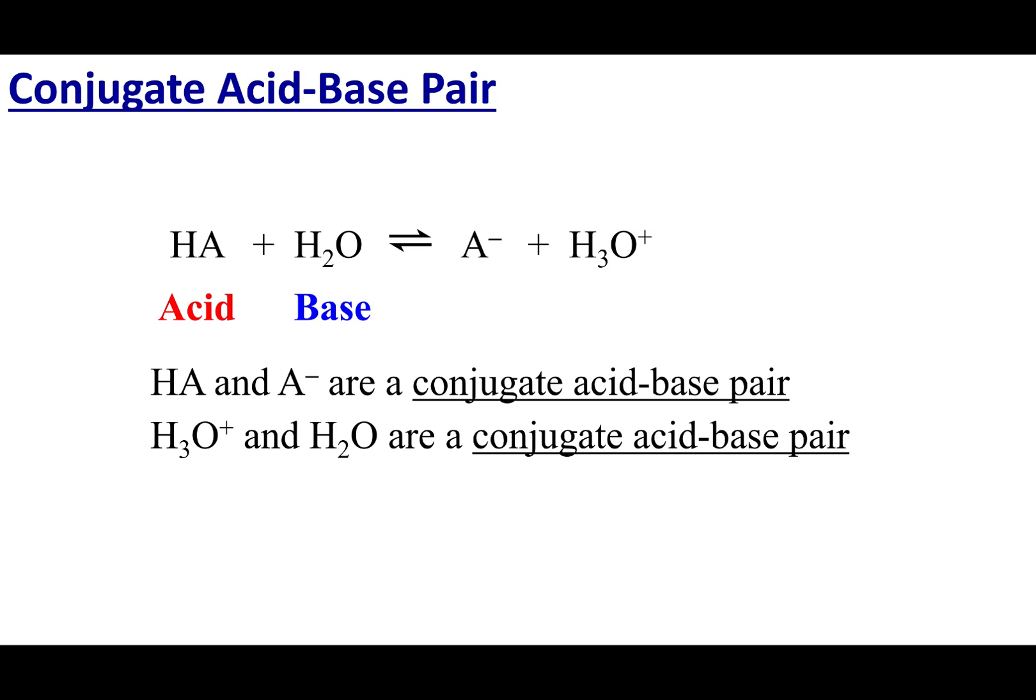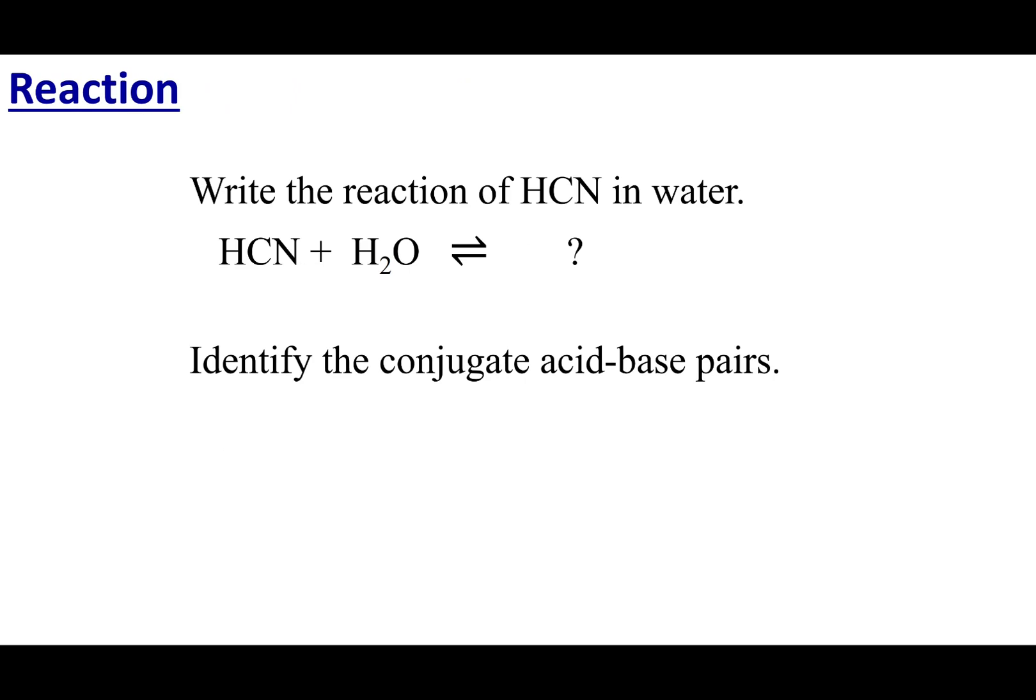They are things that differ by only one H+. Now, I should note that this is still a base, and then this is still an acid. The conjugate just tells you that it is related to something else in the reaction. So what I want you guys to do is write this reaction out for me. If I put HCN in the vicinity of water, why don't you guys tell me what's going to be my products and identify conjugate acid-base pairs. After you're done, mark the right answer.